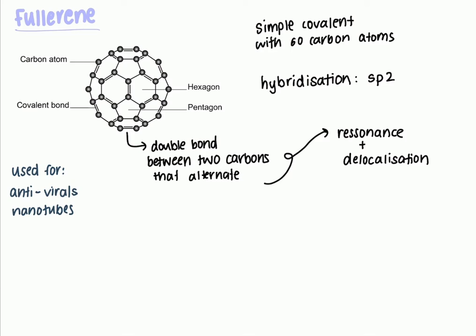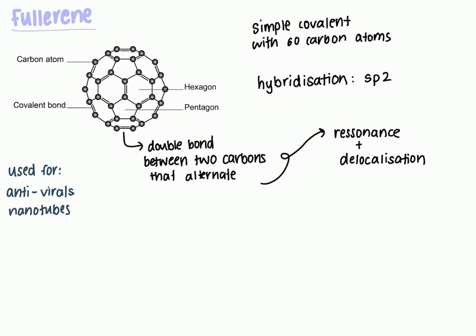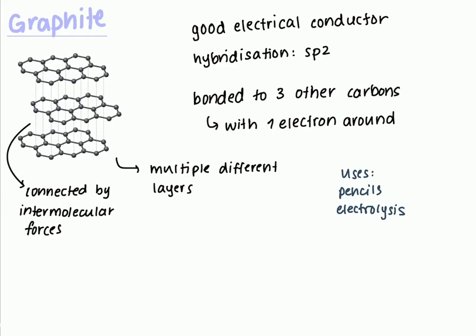Graphite is also made of multiple different layers, as you can see here. These layers are connected by intermolecular forces, which allow these layers to slide over each other. This is why it has very good use in pencils, because when we write, layers of graphite slide onto our paper. It's also used in electrolysis.